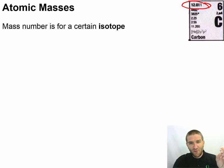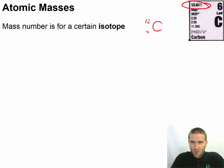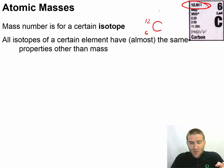Now a mass number is for a certain isotope, and that's when we would see something written like carbon-12. If you remember back, our notation said that the 12 tells us this is the total number of particles inside the nucleus. Carbon tells us there are going to be six protons in it, which means we could actually write the number six if we wanted to. If it had a charge, we put a charge here. All isotopes of a certain element have almost the same properties other than their mass.